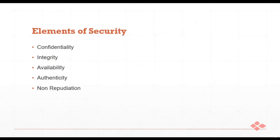There are five elements of security on which the whole security framework is built. First is confidentiality — ensuring that information is accessible only to those who are authorized. Next is integrity — making sure the information is accurate, reliable, complete, and in its original form. Then availability — ensuring that information is accessible to authorized persons when required without any delay.